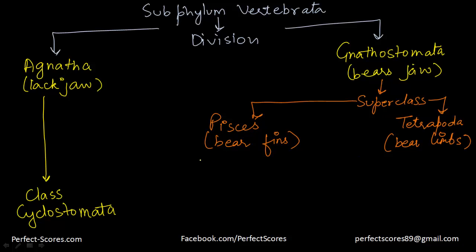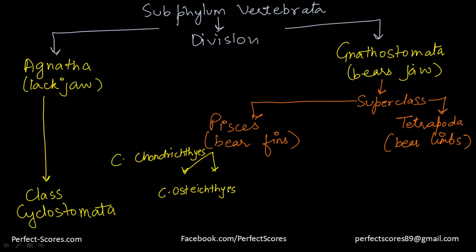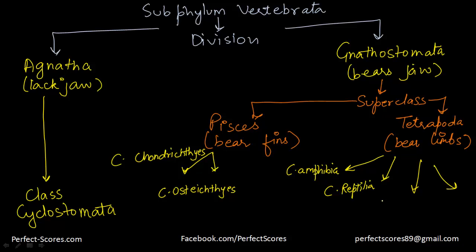Pisces has two classes: class Chondrichthyes and class Osteichthyes. Tetrapoda, which bears limbs, has four classes: class Amphibia, class Reptilia, class Aves, and class Mammalia.